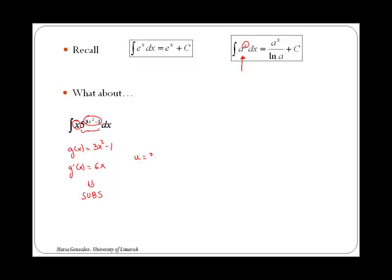Therefore we will call u to 3x squared minus 1, and du dx is then 6x. In order to leave dx by itself we cross multiply, so du is 6x dx, and then we divide across both sides by 6x. So we have dx is du over 6x.